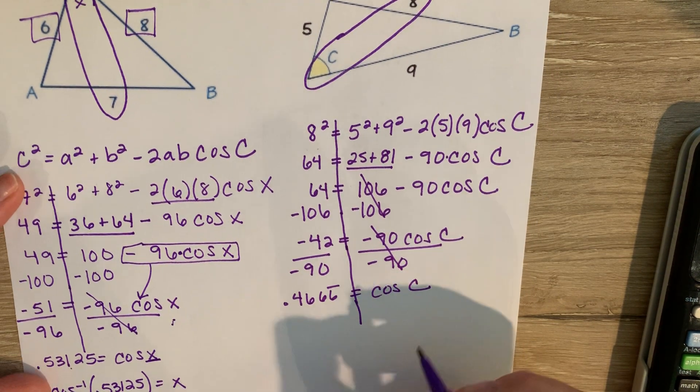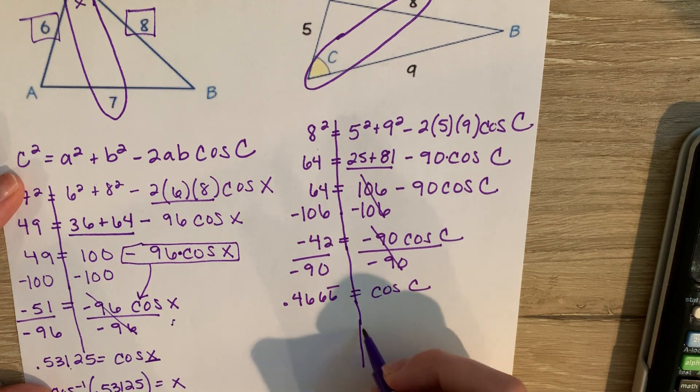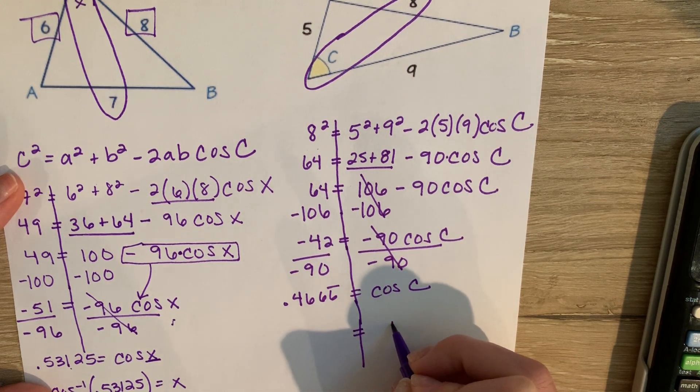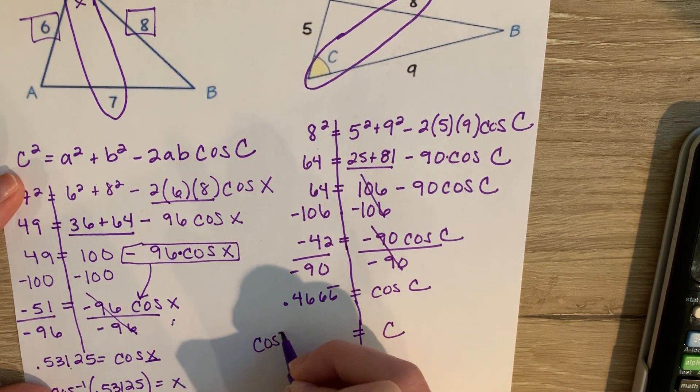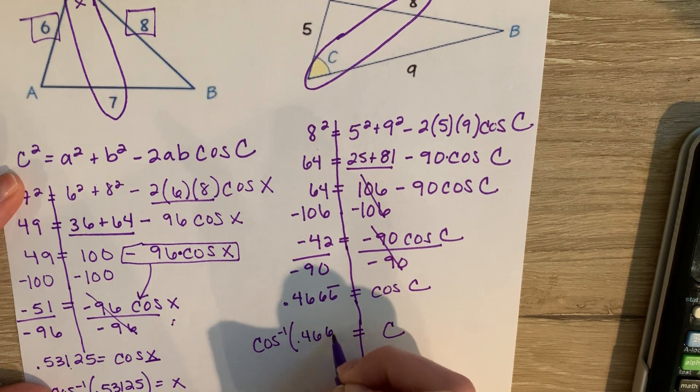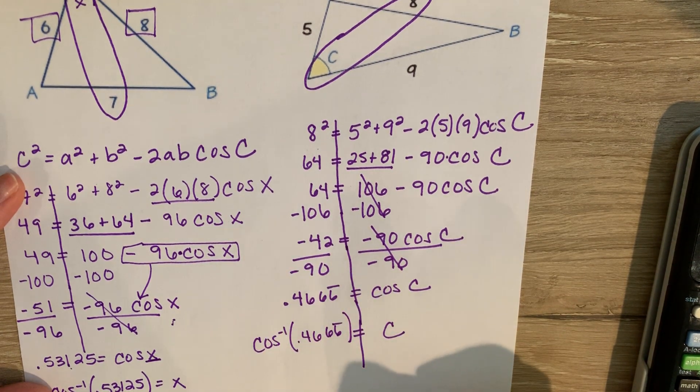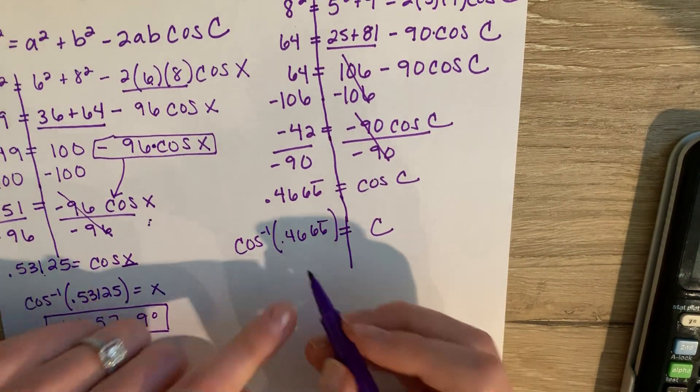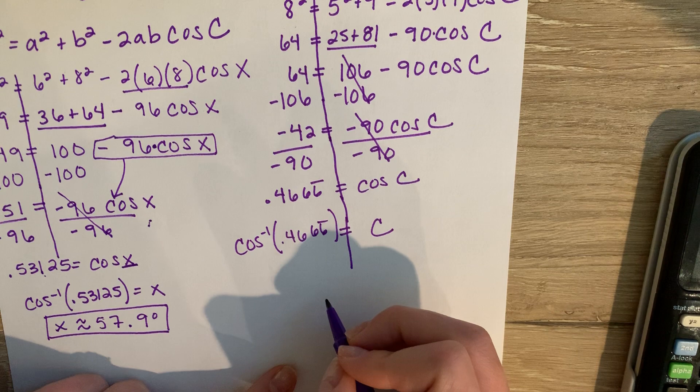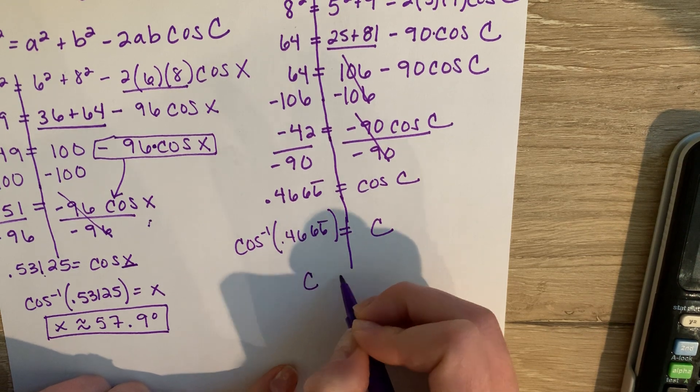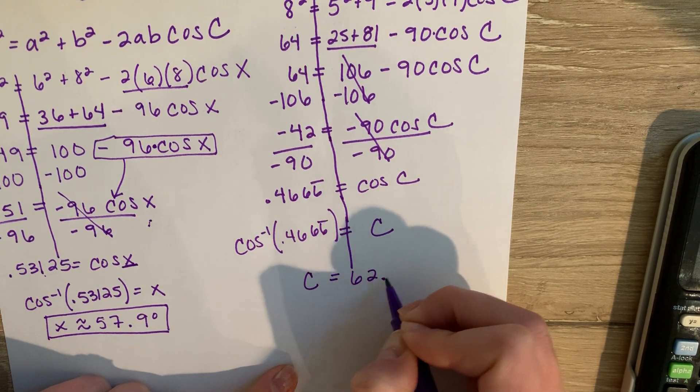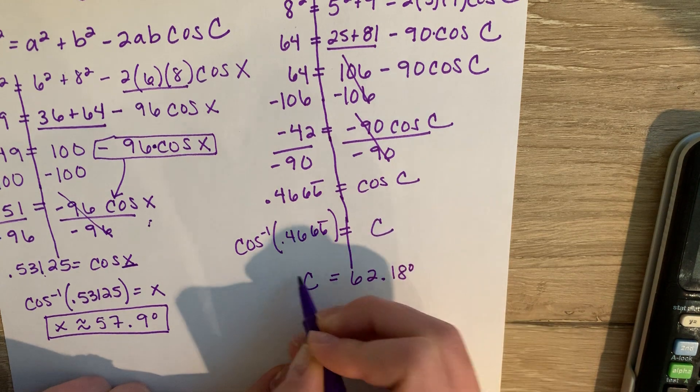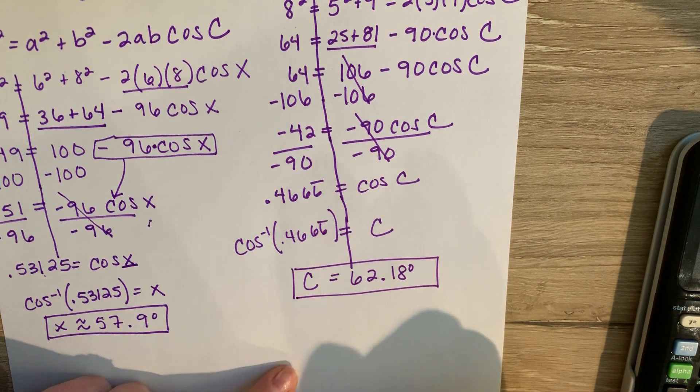When I then do the inverse to get C by itself, and then my final answer, once I plug in the inverse of cosine 0.4666 repeating, I get my angle C to be approximately 62.18 degrees.